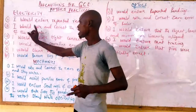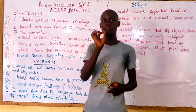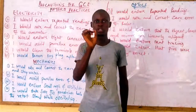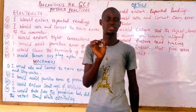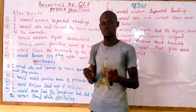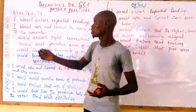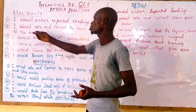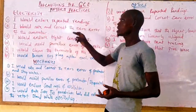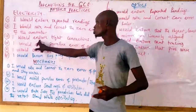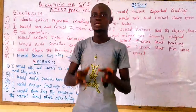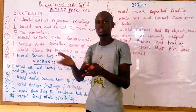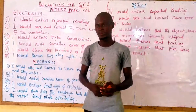The second precaution is: I would note and correct the zero error of the ammeter. That is quite important in physics. If your ammeter has a zero error, it means your readings will be affected. So before you use any instrument, you need to check for zero error. The third precaution is: I would ensure tight connections, because if your connections are not tight you might get wrong readings or fluctuations from the instrument you are using.